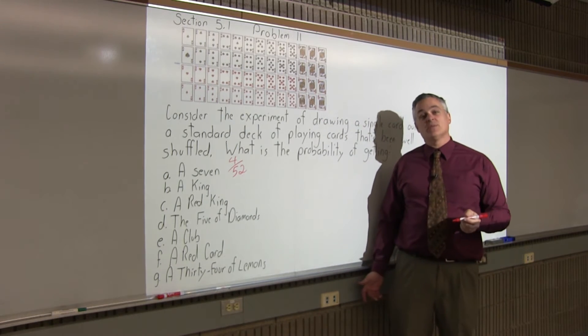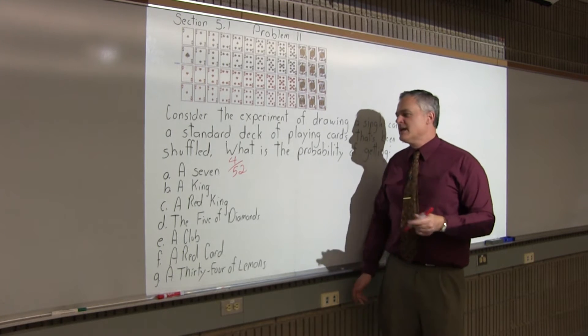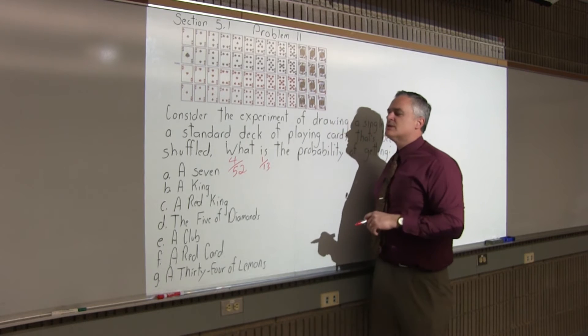So the probability of randomly drawing out a single card that's a 7 would be 4 over 52. And again, that can be reduced, turned into a decimal or whatnot, but 4 over 52 is fine.